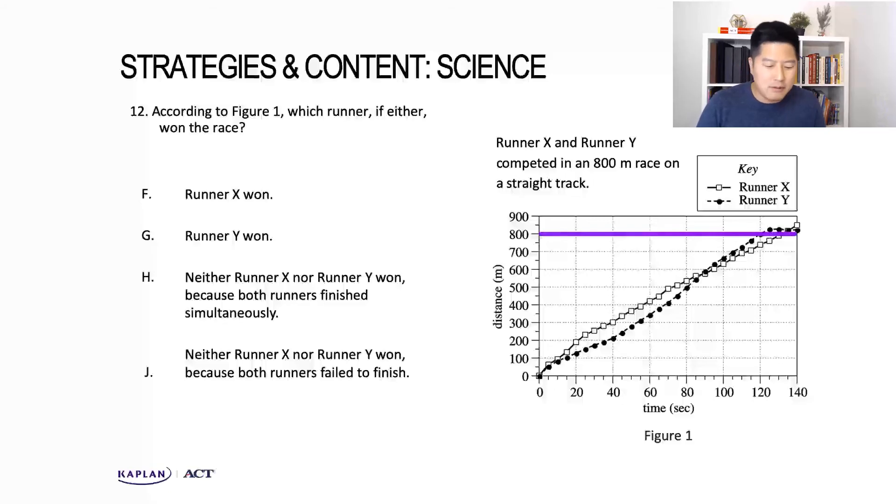The way to think about it is: if you have time on the x-axis, which runner took less time to get to the 800-meter mark? That's how we determine the winner. If we think about it in those terms, runner Y took less time to get to this distance marker, which means runner Y is the winner and our answer for number 12.